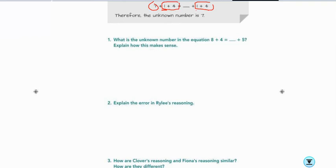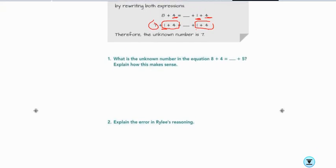So what is the unknown number in equation 8 plus 4 equals blank plus 5? Explain how that makes sense. So one of the things that you can do is you can say, well, clearly we know that 8 plus 4 is 12. And I know automatically that that's 7 plus 5.